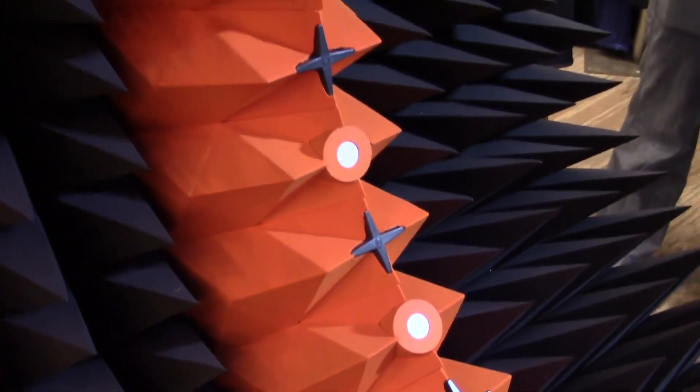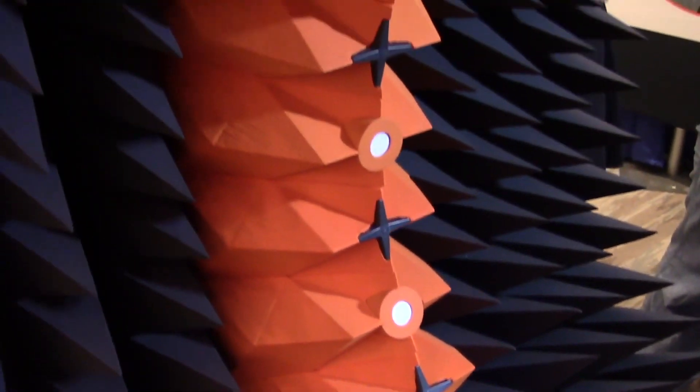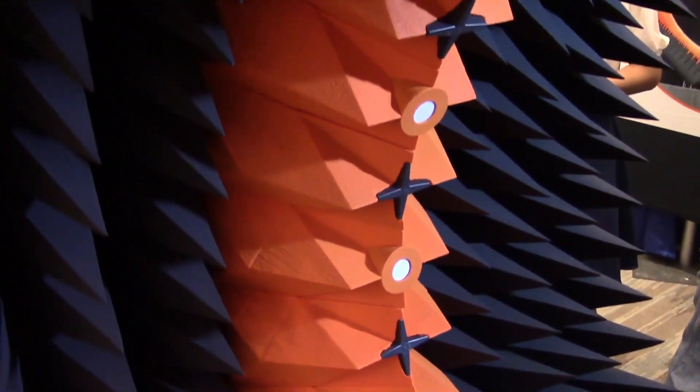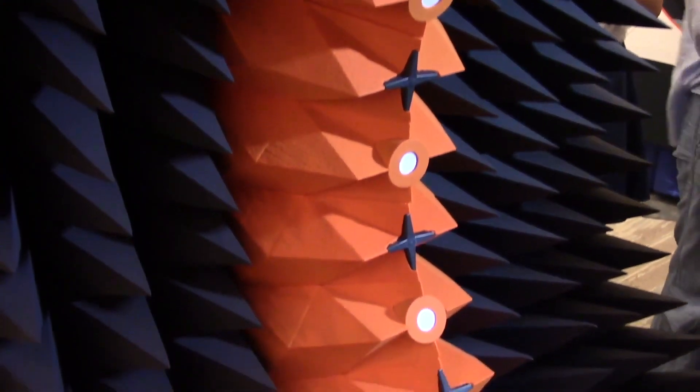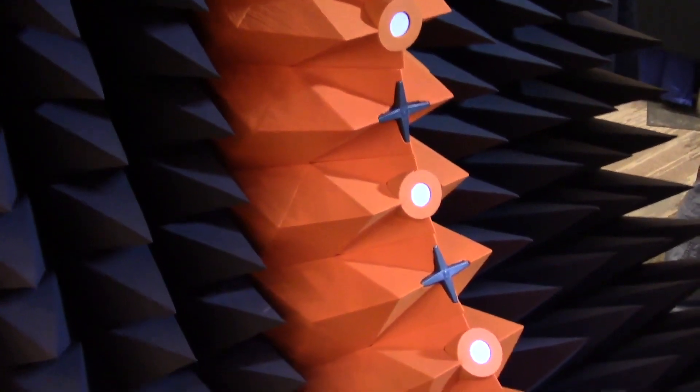The white probes operate 18 to 50 gigahertz while the black probes operate 650 to 6 gigahertz. They're both dual pole so you capture all polarizations.